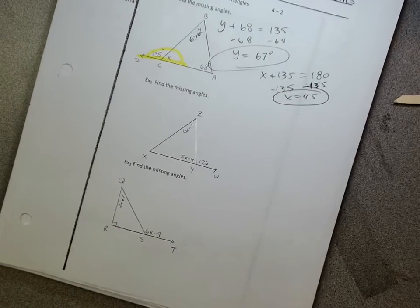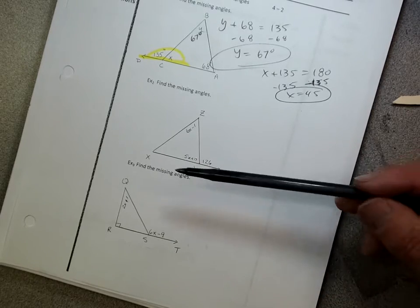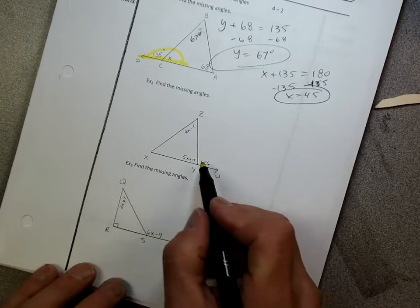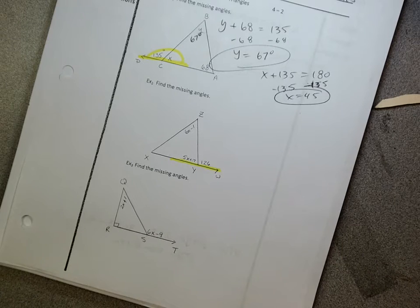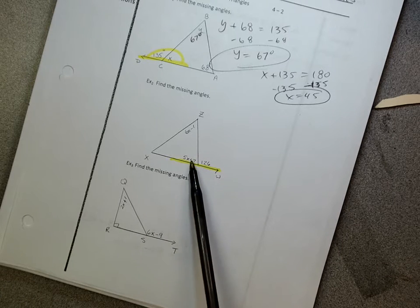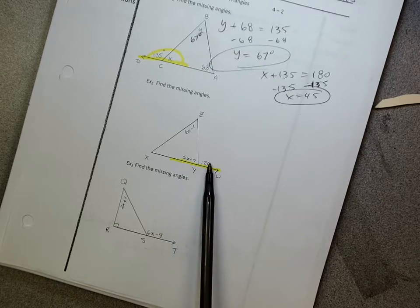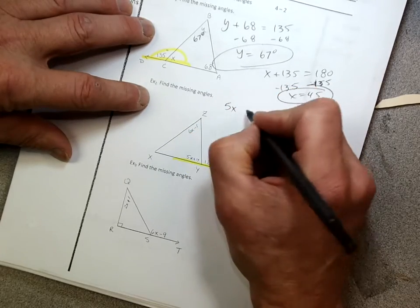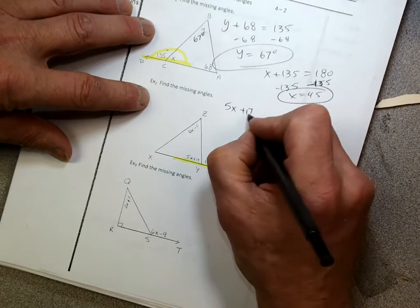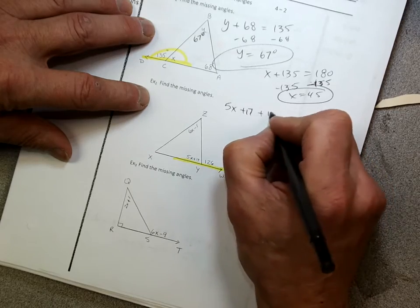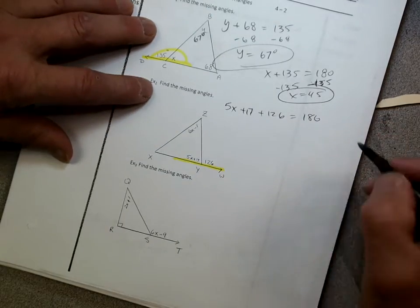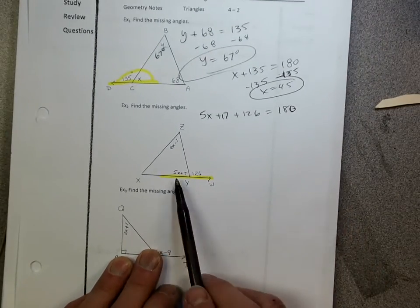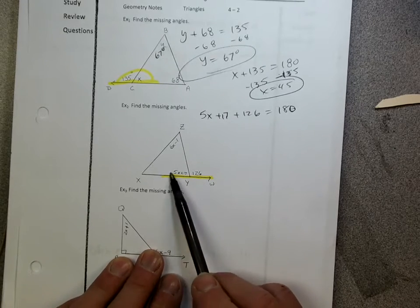Okay, example two. All right, now in this case, I don't know anything about x. So I can't really use my remote interior. But I do know that I'm going to go straight to the fact that I have a straight line here, right? Okay, I see my straight line. So let's add this angle and this angle. The two adjacent angles, let's set them equal to 180. So I'm going to go ahead and go 5x plus 17 plus 126 equals 180, okay? Because I know the two angles must add up to 180. My 5x plus 17 plus my 126 have to equal 180 because it's a straight line, okay?